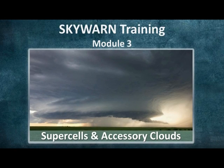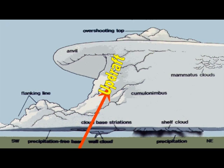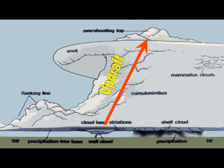Welcome to Module 3 on Supercells and Accessory Cloud Types. Here we're going to look at the classic depiction of a supercell thunderstorm. The left side of the screen is the southwest portion of the storm, with the right side being the northeast portion. We can see the updraft tilted to the right and moving upwards, due to what we call vertical wind shear — the change in wind speed and direction with height. The more of that you have, the stronger your supercell can become and the longer it can maintain itself.